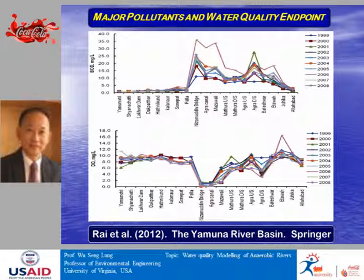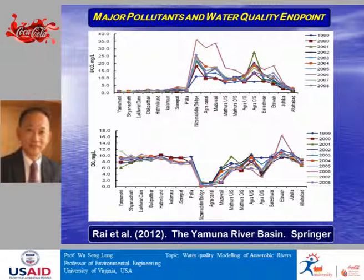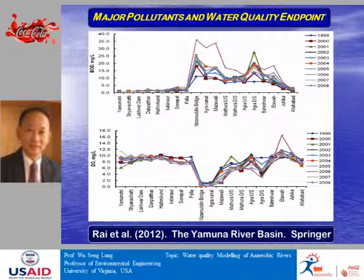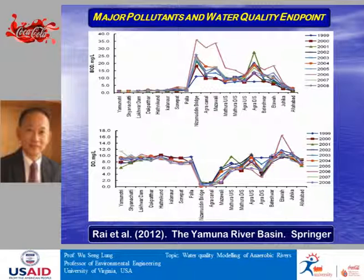This shows the longitudinal profile of BOD and dissolved oxygen. BOD is high, DO is low. Upstream from Delhi, conditions are better. As you enter the Delhi area — approximately 25 kilometers — BOD spikes and dissolved oxygen drops drastically. Additional 2011 and 2012 data confirm similar patterns for BOD and dissolved oxygen in the Delhi area. Coliform bacteria counts are also very high; we recently discussed this with public health agencies during a visit in July.